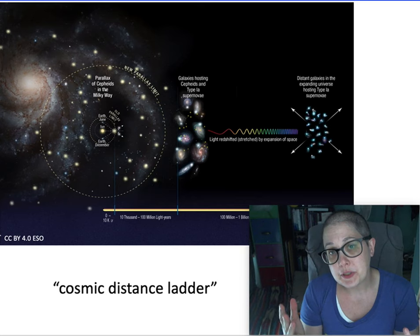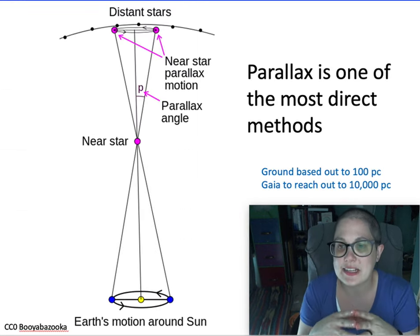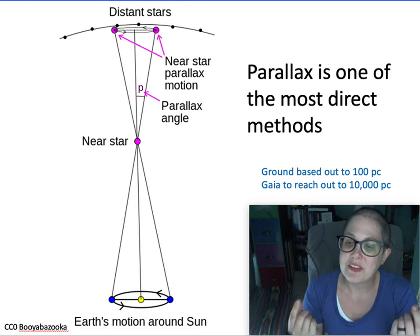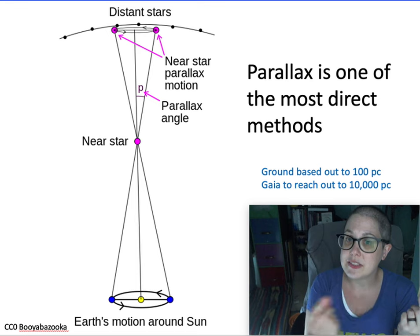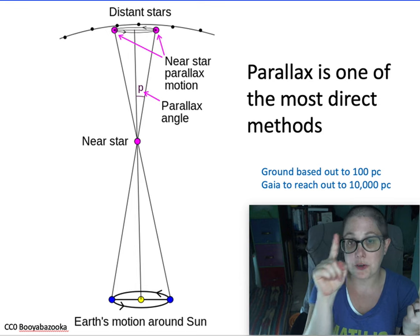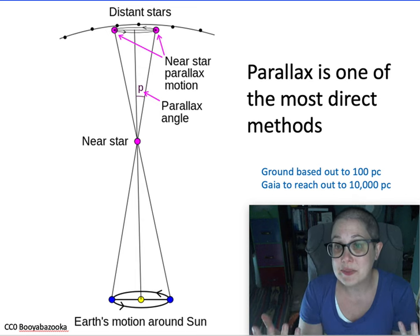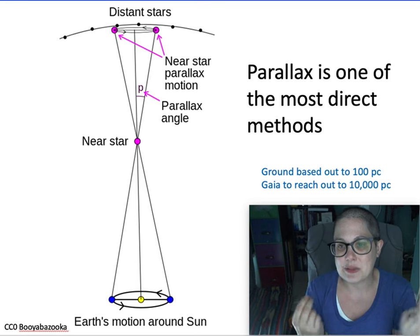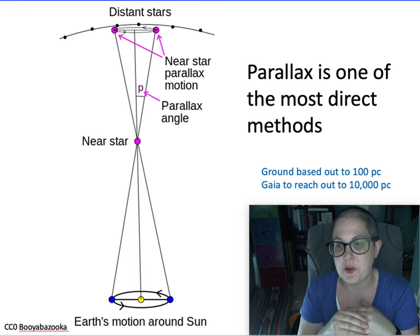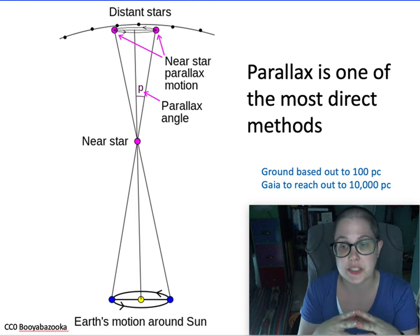So we have to use multiple methods of measuring distance and kind of check them against each other. So first one said, we talked about parallax. It's limited by the earth moving around the sun. So that gives us our baseline, which determines how much a particular object's going to appear to move back and forth across the sky.